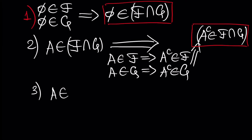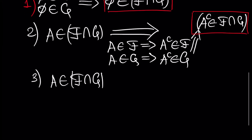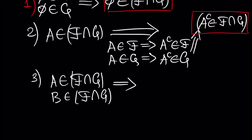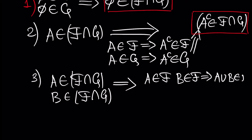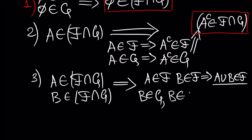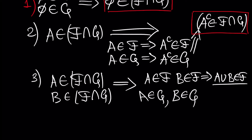So if A is inside this intersection, this means that A is inside F and B is inside F. Next, it means that A is inside G — because B is inside this intersection — and also B is inside F.